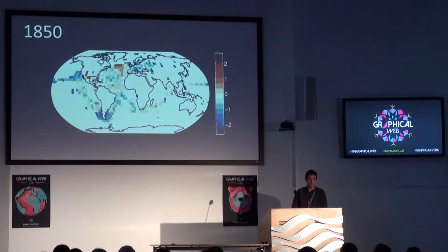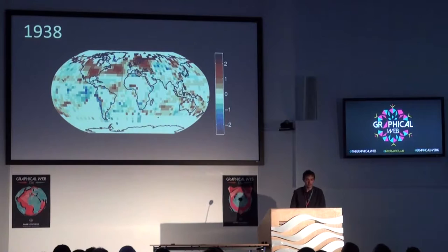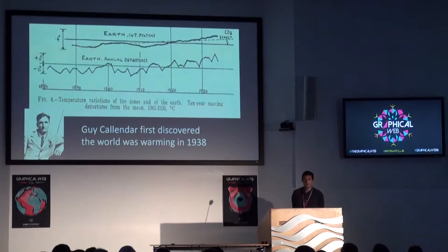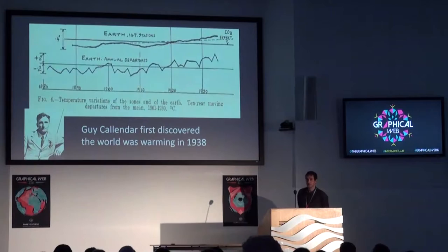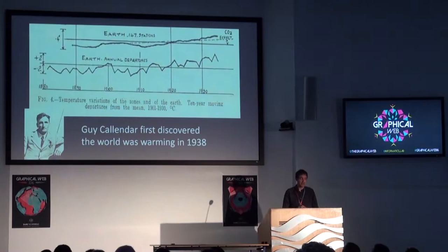Coming forward to 1938, things had improved slightly — we had more observations. It was actually at this point that we started noticing something was happening. This guy, Callendar, was the first person in 1938 to realise that global temperatures had increased. His 1938 scientific paper showed that global temperatures had increased by about 0.3 degrees Celsius over the previous 50 years, using only 147 data points collected by hand — no computers. He was actually an amateur meteorologist, just a very enthusiastic data collector.